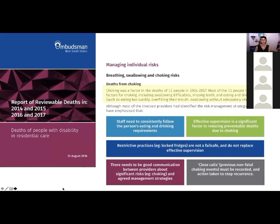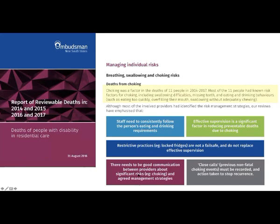This is very new information from the New South Wales Ombudsman's report. The NSW Ombudsman has been looking at deaths of people with disability in residential care and has been reporting on this for nine years. The most recent report was published on the 31st of August 2018.